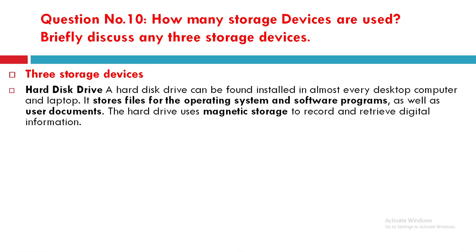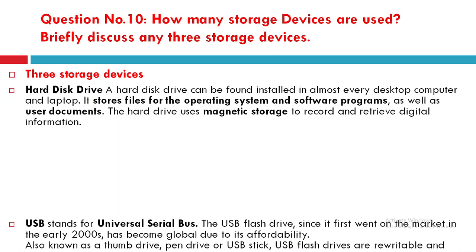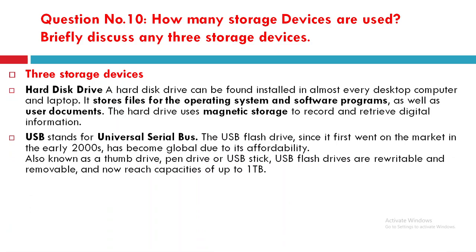The first example is the hard disk. A hard disk drive can be found installed in almost every desktop computer and laptop. It stores files for the operating system and software programs, as well as user documents. The hard drive uses magnetic storage to record and retrieve digital information.